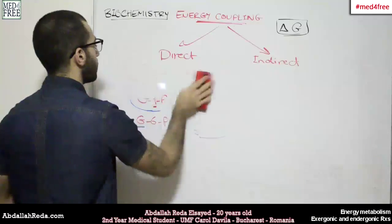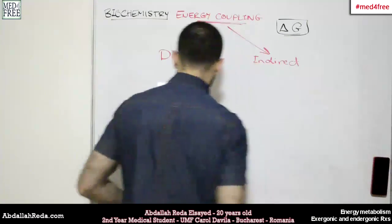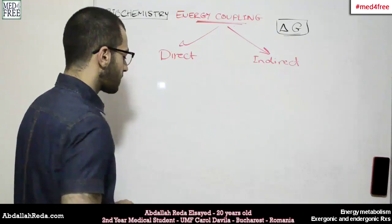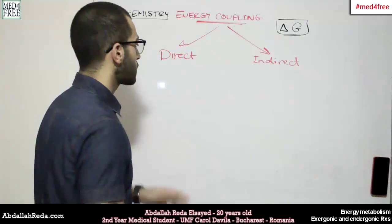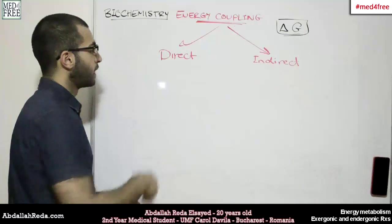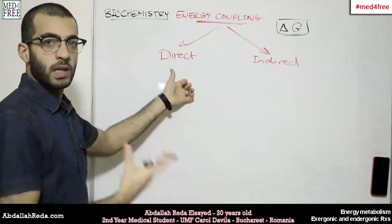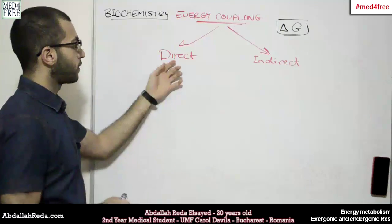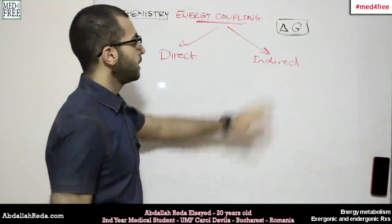Now for the indirect coupling, we have a molecule that acts as an energy transporter between two different reactions. And it doesn't have to be an intermediate compound through the chain itself. That's why it's called indirect while the other one was called direct. Because the intermediate molecule that affects the connection of the two reactions in the first case is actually involved in the reaction itself. But in the indirect reaction...